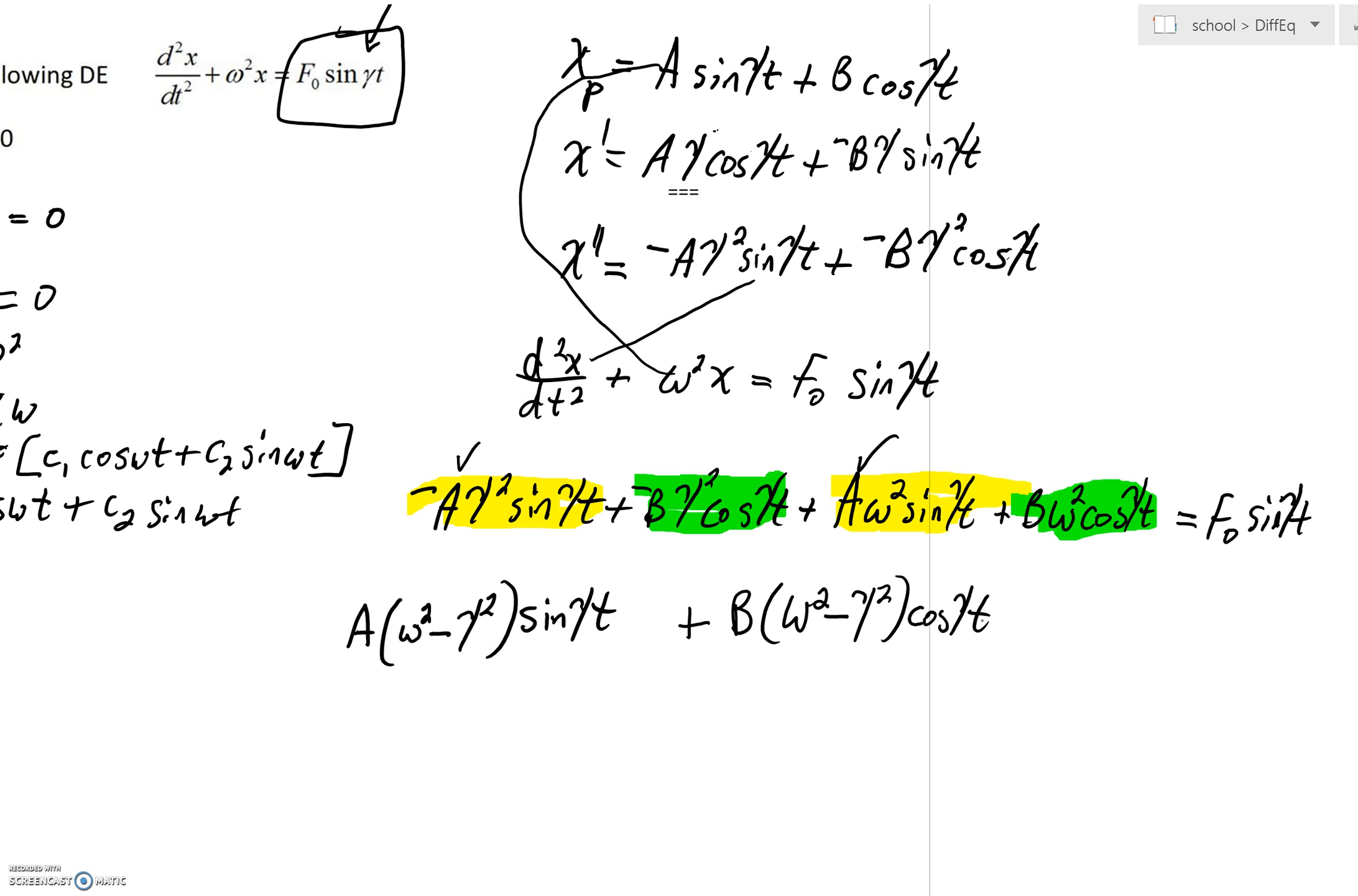So, we have what we were working with in yellow and in green. But on the right-hand side, we really have f₀sin(γt) plus zero cos(γt).